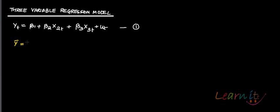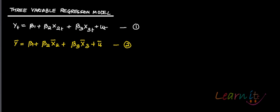Now taking means of each of these variables in equation 1, what you will get is: y bar equals to beta 1 plus beta 2 x bar 2 plus beta 3 x bar 3. Note that there are no subscripts in this equation because these are the variables averaged over time. This is an exact equation.